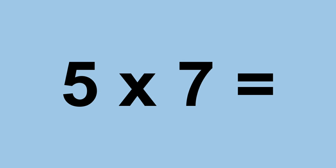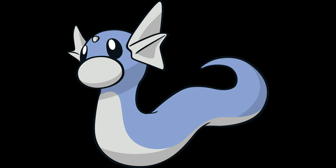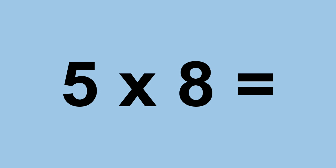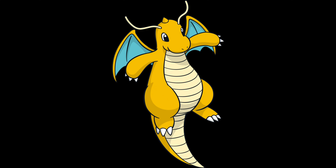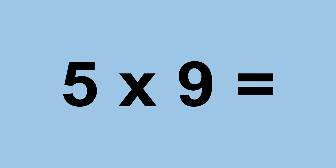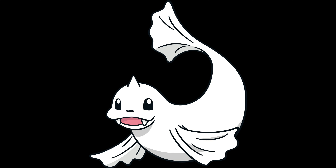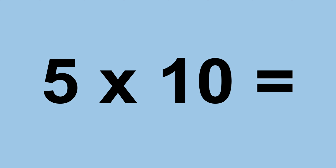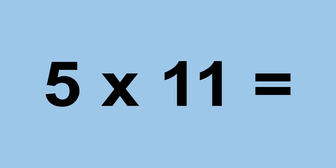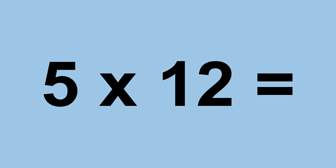Five times seven equals thirty-five. Five times eight equals forty. Five times nine equals forty-five. Five times ten equals fifty. Five times eleven equals fifty-five. Five times twelve equals sixty.